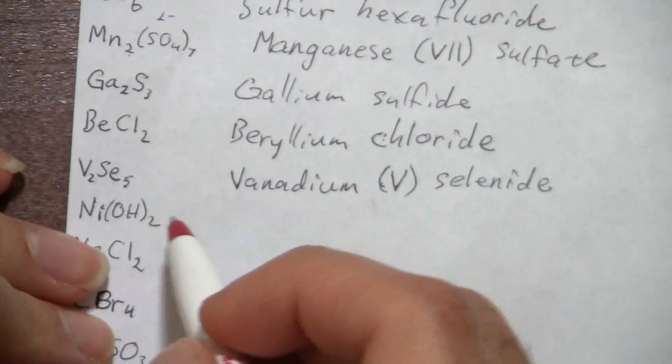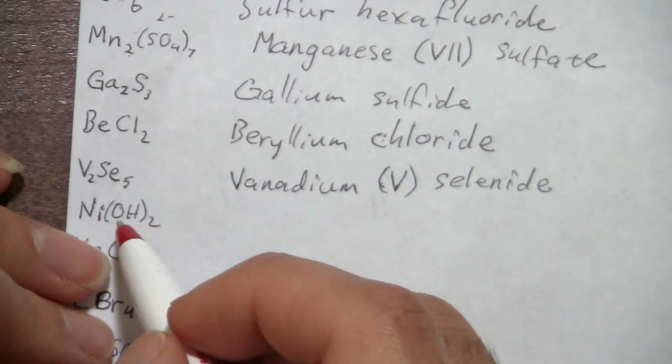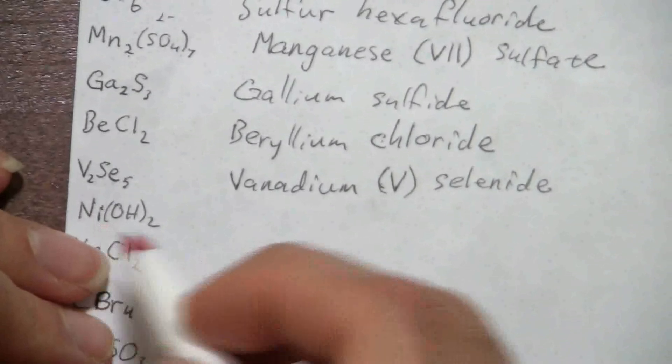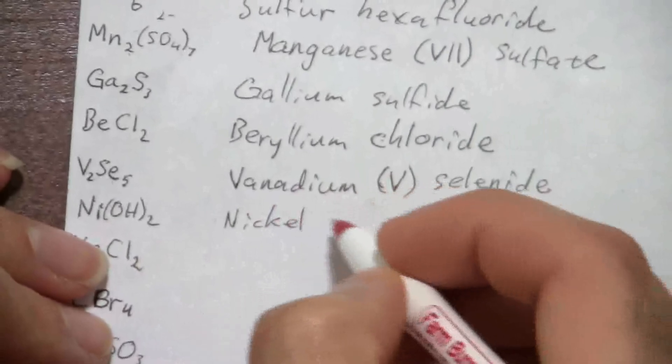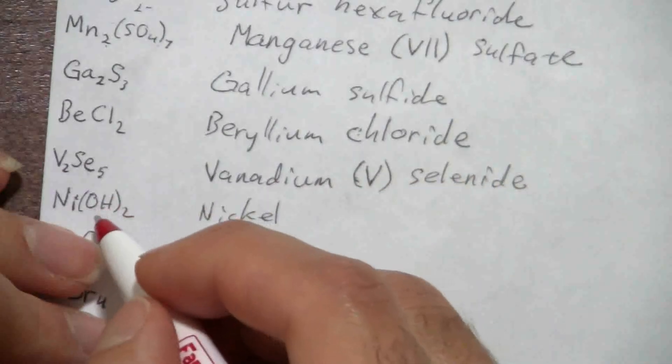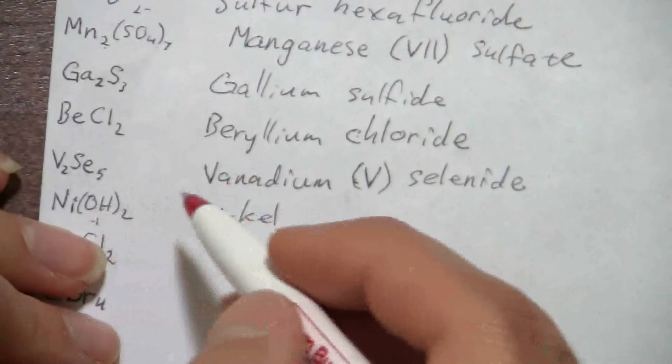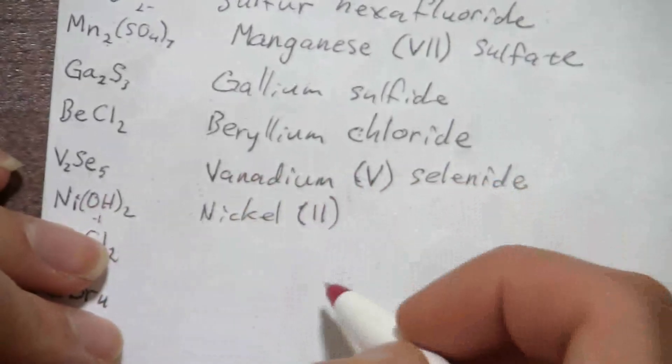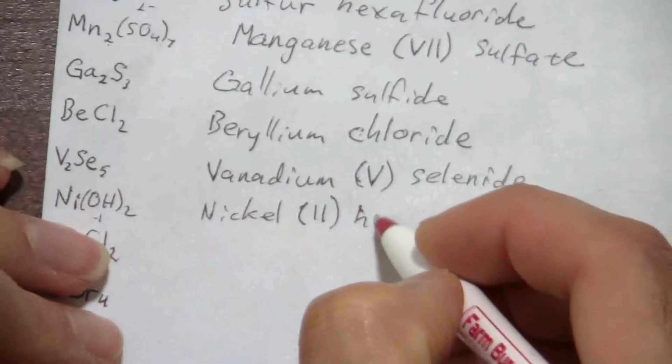Now here I have nickel and hydroxide. Nickel is a transition metal, so I need to specify its charge. We know from hydroxide that it has a negative one charge because we've memorized it, and we have two of those, so nickel must have a positive two charge. So this is nickel(II) hydroxide.